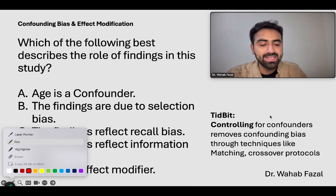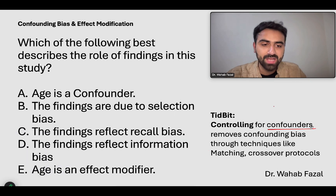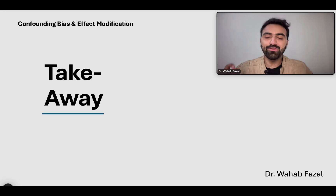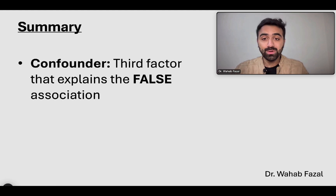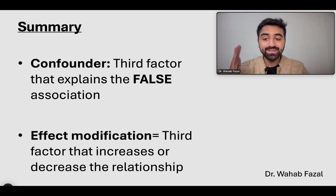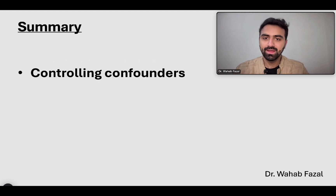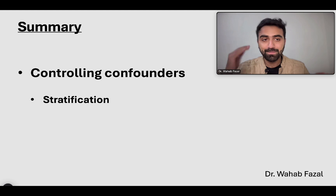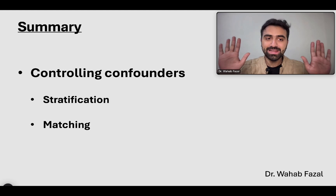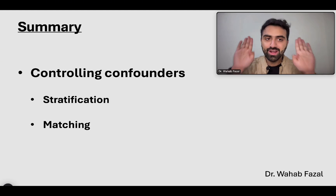What do we want to learn from this question? When you control for confounders — how do you control for confounders? You match the two groups in all other factors except the one you're studying. Techniques like matching and crossover protocols are used. So the takeaway: what did we actually study? Confounders — the third factor that explains the whole false association, meaning the association between the outcome and the exposure actually does not exist. Effect modification — the third factor that increases or decreases the actual observed relationship between outcome and exposure. Two methods of controlling confounders: stratification, which groups based on the confounder being present or absent and removes the false association; and matching, which makes the two groups extremely similar in all other factors, removing the confounders.